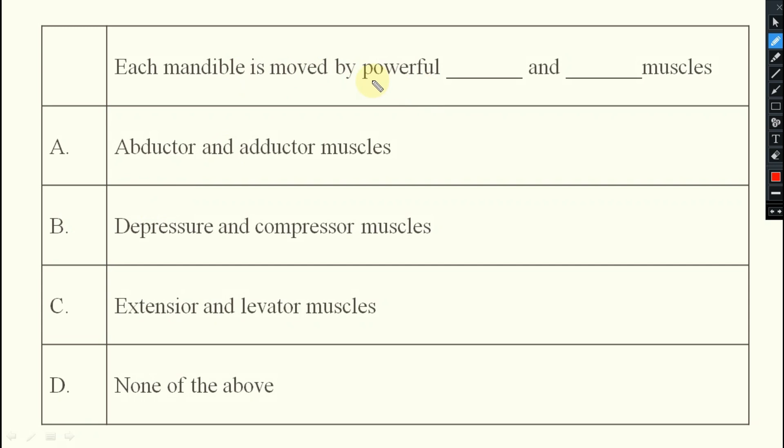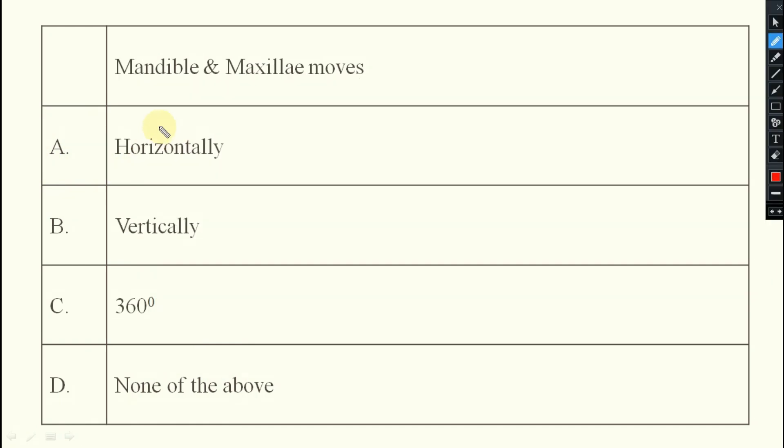Each mandible is moved by powerful abductor and adductor muscles. You see, options are abductor, adductor, depressor, compressor, extensor, levator, none of the above. So here the right answer will be abductor and adductor.